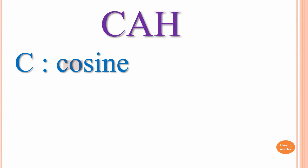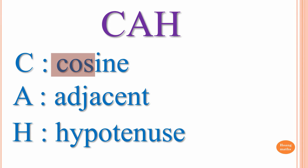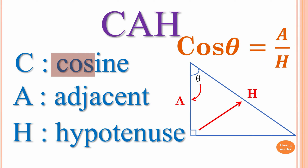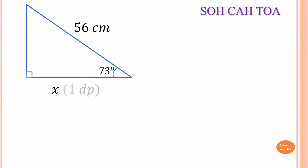C is for Cosine, but when we write we only write 'cos'. A is for Adjacent and H is for Hypotenuse. With this triangle, angle theta is given. Adjacent means the side next to the angle, so we label it A. The longer side opposite the right angle is the hypotenuse, labeled H. So cos(θ) = A/H.